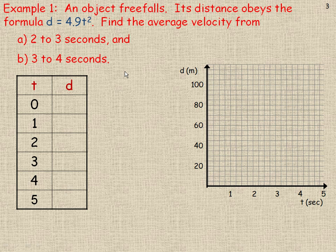In this example, on the third page, we have an object that's free falling, and its distance obeys the formula d = 4.9t². We're asked to find the average velocity from 2 to 3 seconds and also 3 to 4 seconds. So we're going to fill out a table to display the distances at 0, 1, 2, 3, 4, and 5 seconds. We substitute 0 in place of time and get 0.